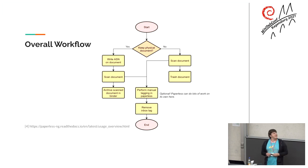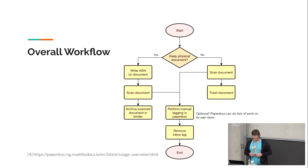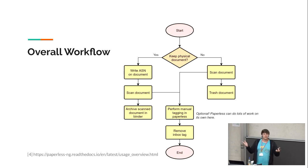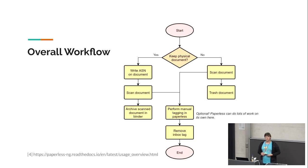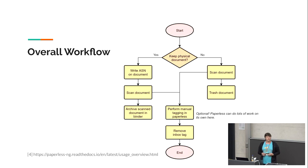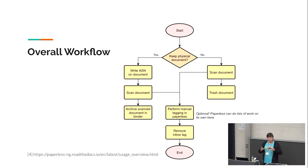The overall workflow — also from the documentation, you can tell this is a German guy. You start with a document: do you want to keep this? For an invoice, yes — store it. A contract — yes, keep the paper too. A manual — maybe not. If you want to keep it, write an archive serial number on it. Then scan the document and it gets archived. If you don't want to keep the physical copy you can throw it away, then tagging is performed.